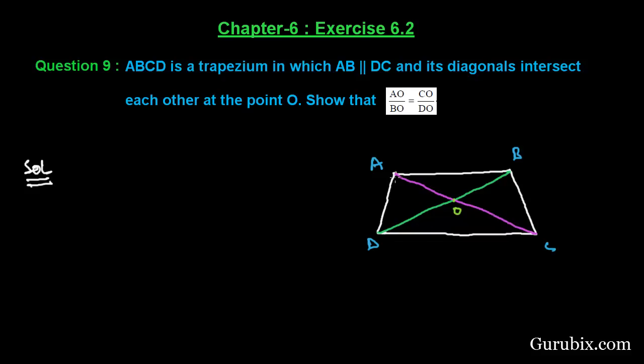We have to prove AO over BO equals CO over DO. First we shall write what is given to us.